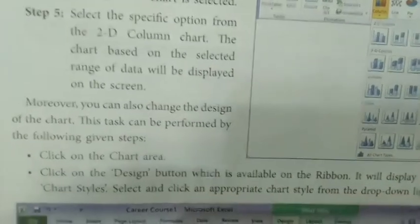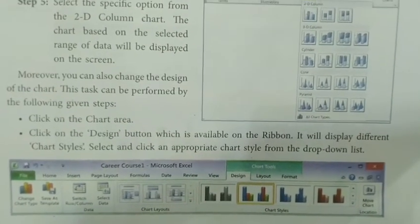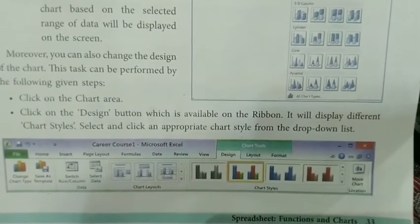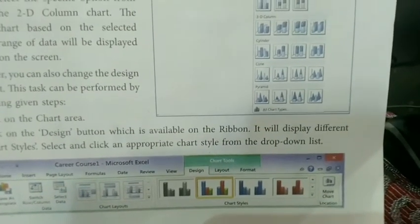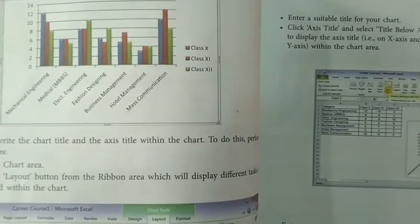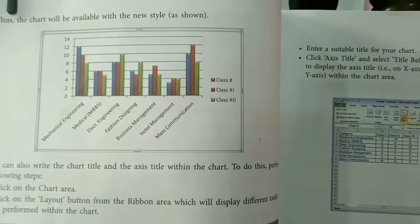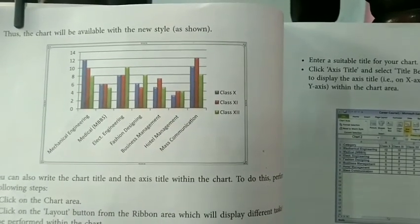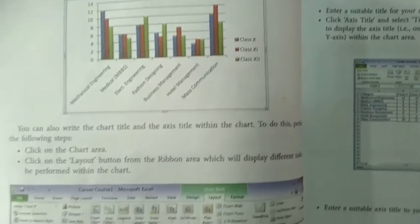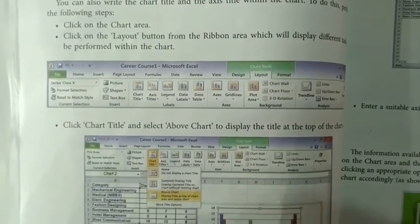The chart based on the selected range of data will be displayed on the screen. Click on the chart area, then click on the Design button available on the Ribbon — it displays different chart styles. For example, under Column Chart there are different subdivisions available. After following the steps, the graph will be represented graphically. The courses are shown on the X-axis and the values on the Y-axis.